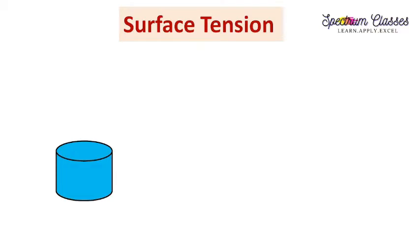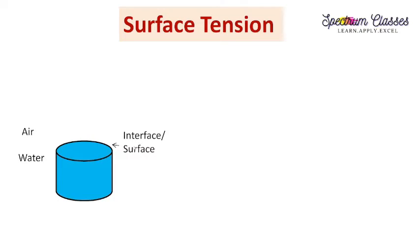I'll give you the explanation of how surface tension works and how these phenomena can be explained. Suppose this is a container or a beaker filled with water — the blue color represents the water. Outside this blue color we have air. Between water and air there is an interface, or the surface of the liquid.